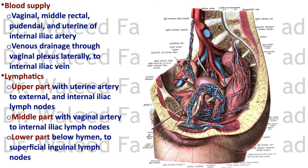For lymphatics: the upper part drains with the uterine artery to the external and internal iliac lymph nodes, the middle part drains with the vaginal artery to the internal iliac lymph nodes, and the lower part drains to the superficial inguinal lymph nodes.